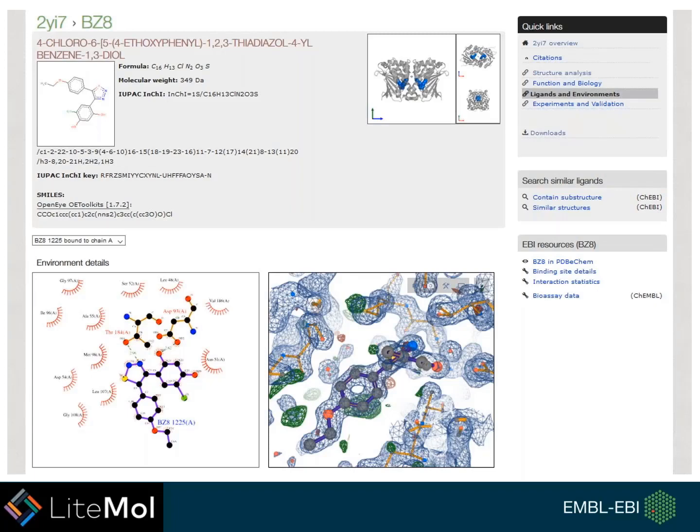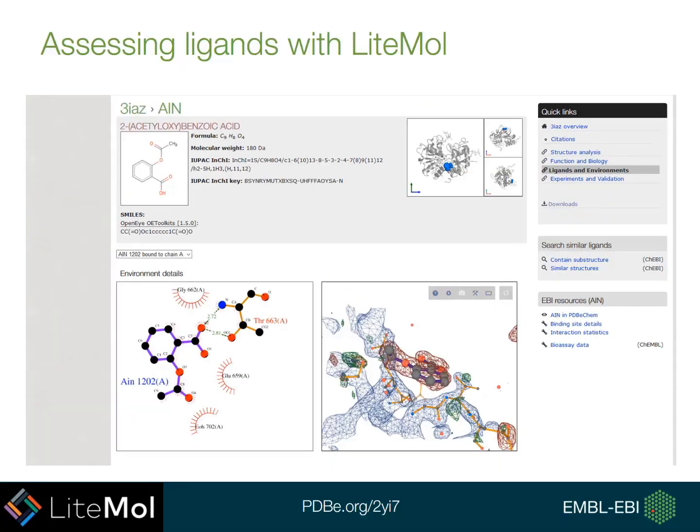If you want to look at a different instance of that same ligand in the structure, there's the option to change this using the box shown here. We also provide two different views of the binding site: a 2D representation on the bottom left, and also in Lightmole with the structure and density shown.